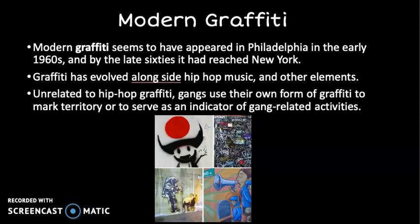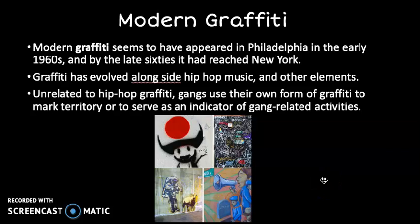Moving on to more modern graffiti — the style we know today. Modern graffiti first started in the 1960s, first appearing in Philadelphia and then moving on to New York, especially in the subway system. Graffiti evolved alongside hip-hop music, influenced by what was going on in music and culture at the time. Separately from hip-hop, gangs in the 1960s and 70s used graffiti to mark their territory — basically a way of saying who belonged on what side of the street or area of town.